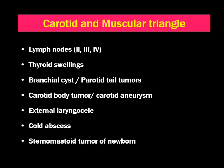Carotid body tumor is found at the carotid bifurcation and is a paraganglioma, which is a very vascular and pulsatile tumor. Sometimes carotid aneurysm might also be found in the lateral neck. External laryngocele is not very common but may present in the lateral neck. Cold abscess may present in the carotid triangle. Sternocleidomastoid tumor of the newborn is a misnomer — it is a hematoma found in the lateral neck in relation to the sternocleidomastoid muscle on its anterior aspect, basically in the lower one-third. The swellings in the carotid and muscular triangle may be congenital or acquired conditions.